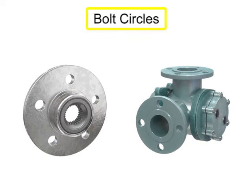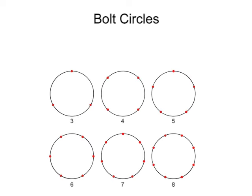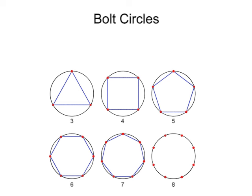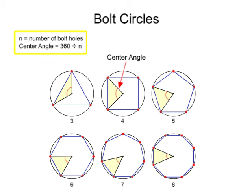A bolt circle occurs when bolt holes are periodically spaced in a circular pattern. Bolts arranged in this pattern offer the most stability and strength for machined parts and are often used in flanges and wheels. Bolt circle patterns typically have 3 to 8 bolts equally spaced along the circumference of a circle, forming a triangle, square, pentagon, or other equilateral polygon. The lines that connect two of the holes and the center of the bolt hole circle form a triangle. The center angle of each triangle can be found by dividing 360 by the number of bolt holes. For instance, a 3-bolt circle has a center angle of 120 degrees, and a 4-bolt circle has a center angle of 90 degrees.